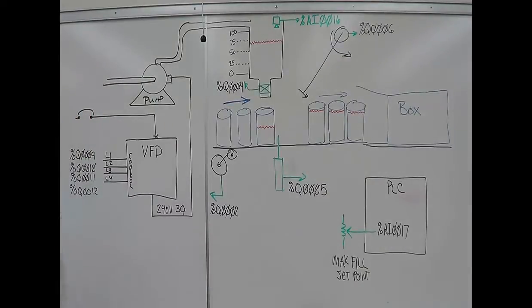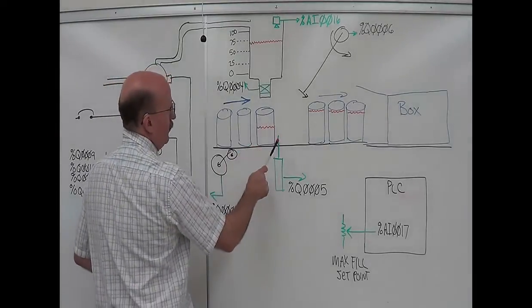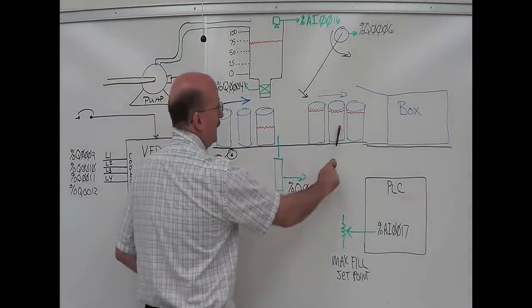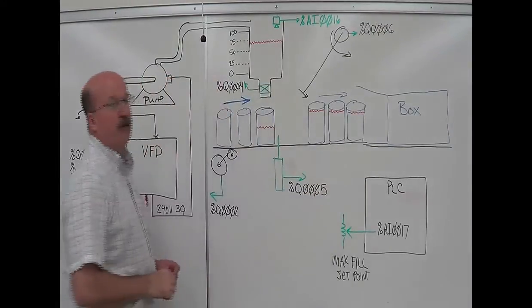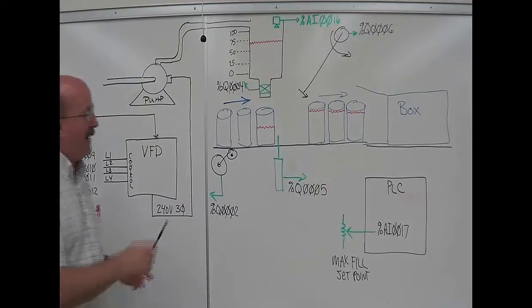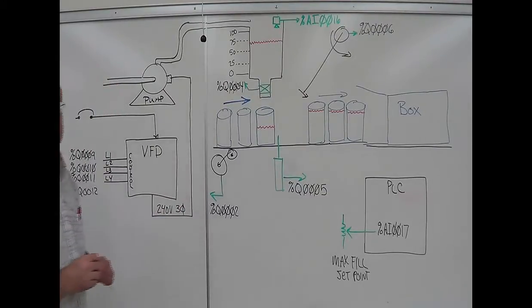From that point on, it's handled by another station. All you're doing is filling it, releasing it, letting it count up to twelve cans up here, and then you push them all in the box. Once that happens, the next station takes place.